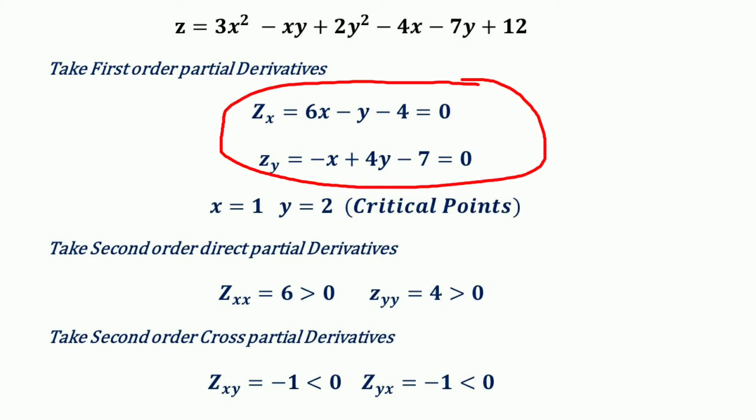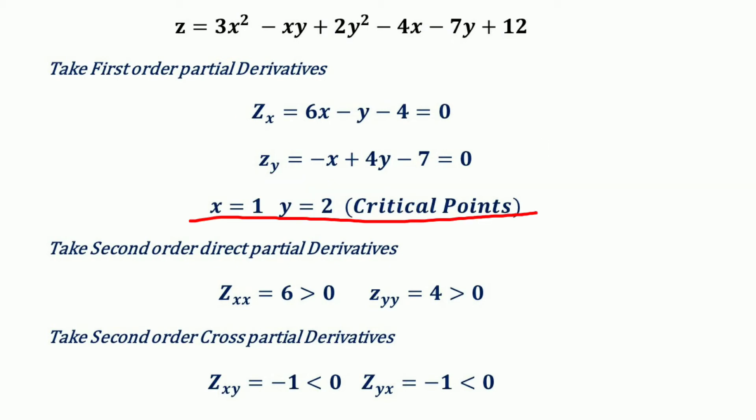When these two equations are solved simultaneously, we get the critical values x = 1 and y = 2.